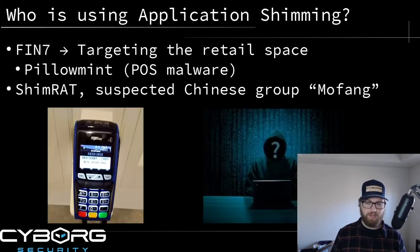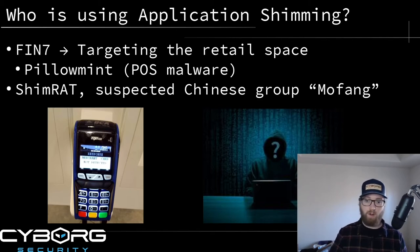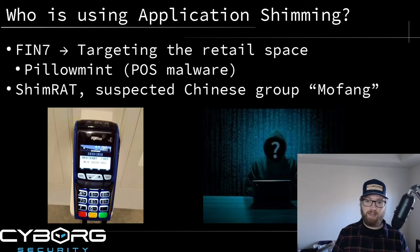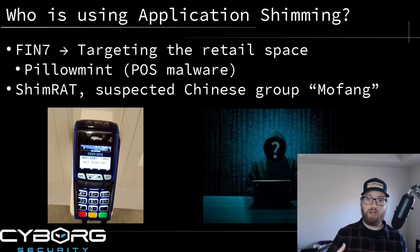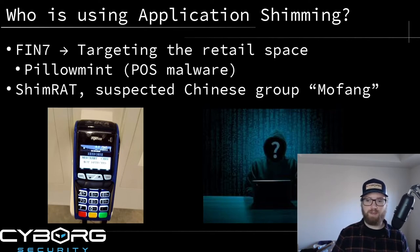Who's using application shimming? The big one is FIN7 - Financial 7 - a malicious threat actor group targeting the retail space: restaurants, retail stores, and similar businesses. They have a piece of malware called Pelomint, loaded maliciously on point-of-sale systems, that uses application shimming so that if a POS system is ever rebooted, Pelomint uses an application shim to load back again. We've also seen this technique used by Mofang, a suspected Chinese group whose RAT people call ShimRat.